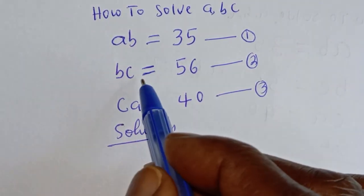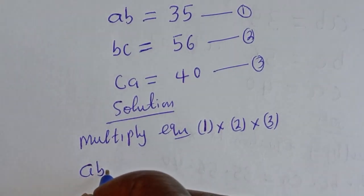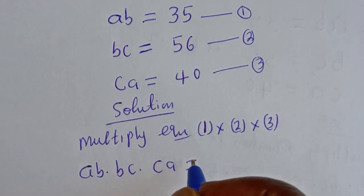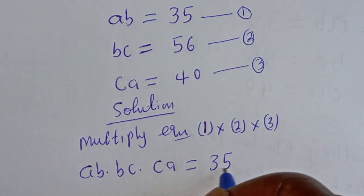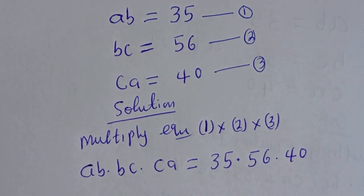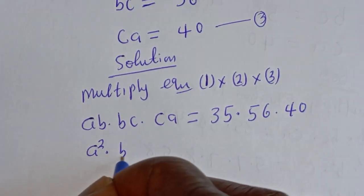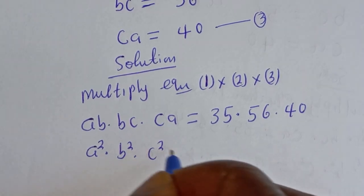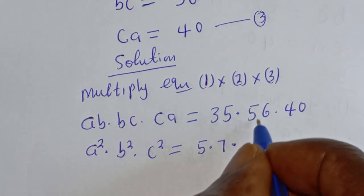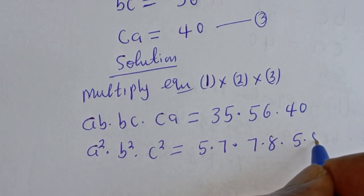Let's multiply equation 1 by equation 2 and by equation 3. Then AB multiplied by BC multiplied by CA is equal to 35 multiplied by 56 multiplied by 40. And A squared multiplied by B squared multiplied by C squared is equal to 35 — that is 5 multiplied by 7 — multiplied by 56 — that is 7 multiplied by 8 — multiplied by 40 — that is 5 multiplied by 8.